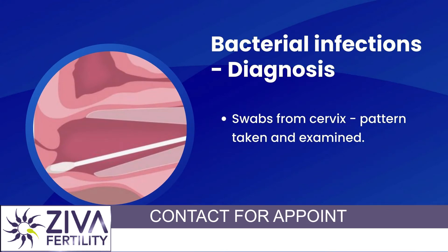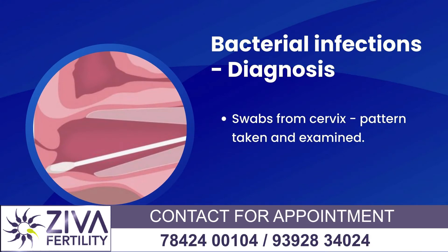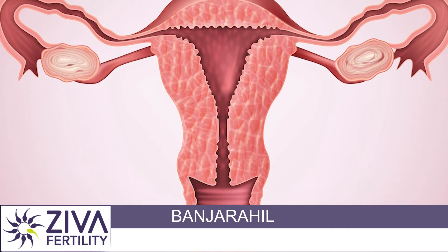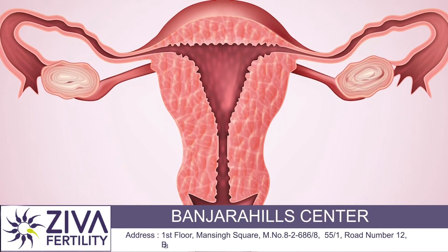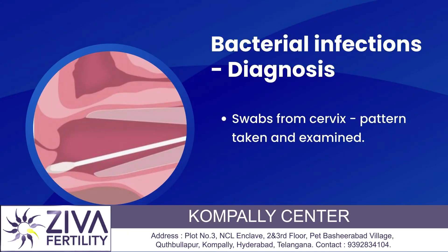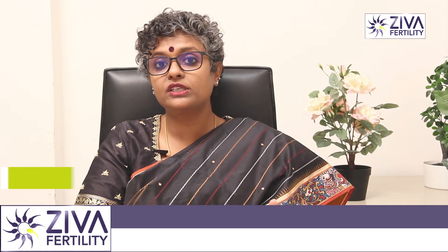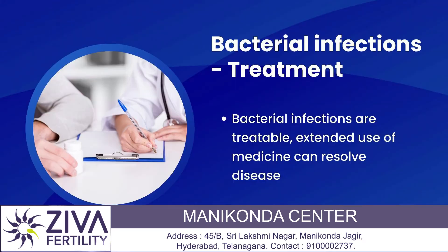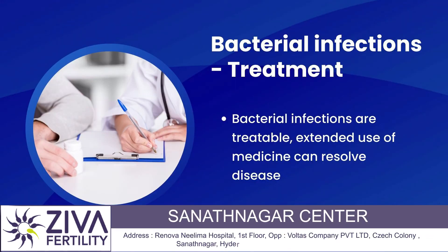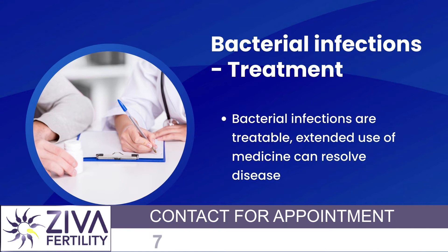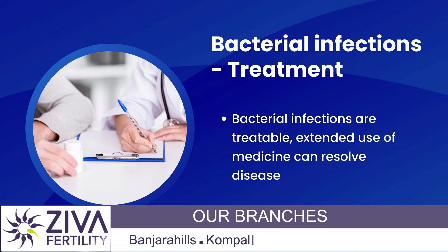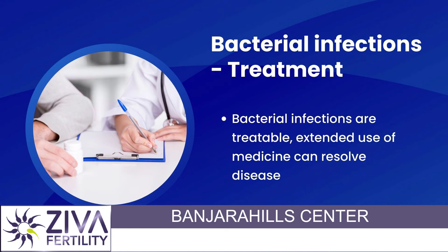Tests are usually done by a small swab test — a swab is passed into the vagina and a small sample is taken and examined. If it was a previous infection, antibodies may be present, and depending on that, treatment is given or not. Usually these are treatable, and prolonged use of medication can also help you get over this problem if the severity was less.